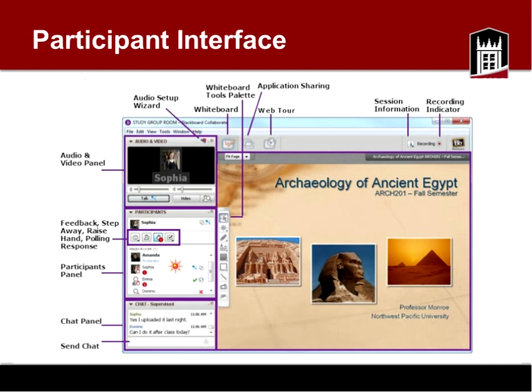Another thing you can do: if you click your mouse down on the top title bar of any panel, hold your mouse button down, and drag it off the window, you can detach it from the main interface and expand it however you want. If you have a second monitor, you could keep the participants panel and chat on a separate monitor to better see who's joining, who's raising their hands, and who's typing in text chat.